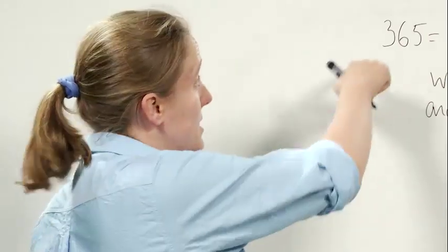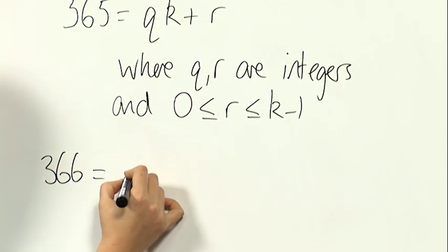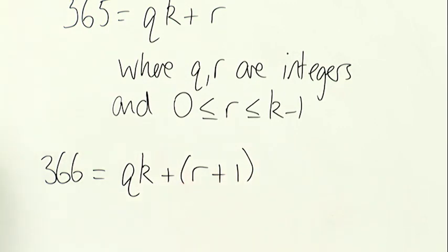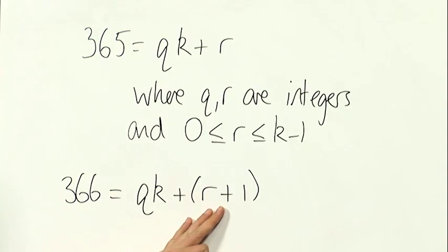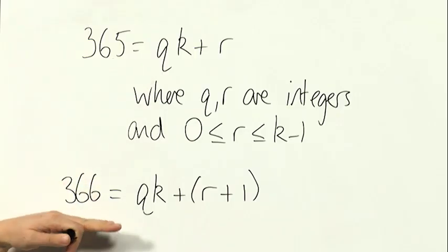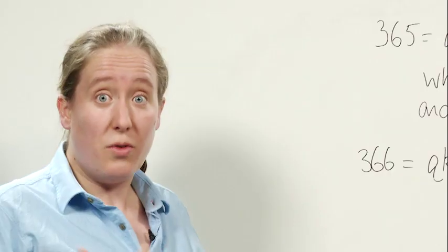And then what happens for 366 in this case? So then 366 is q times k plus r plus 1. And lots of the time, that's in the correct form with r plus 1 being the remainder. The exception is when r plus 1 is equal to k, because then we can incorporate another one here and have remainder zero. So lots of the time when we divide 366, we get remainder one more. But sometimes when r plus 1 is equal to k, so k is a factor of 366, Phil has remainder zero.